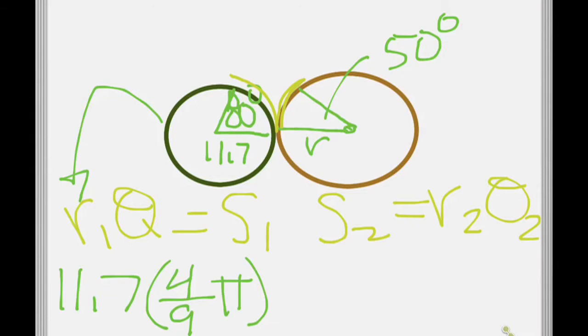So S1 and S2 are going to be the same because those gears are touching. My arc lengths are going to be the same. That's going to be equal to, I'm trying to find my R2. That's the big wheel. So I'm going to call that R. And then what was 50 in radians? 5 18ths.